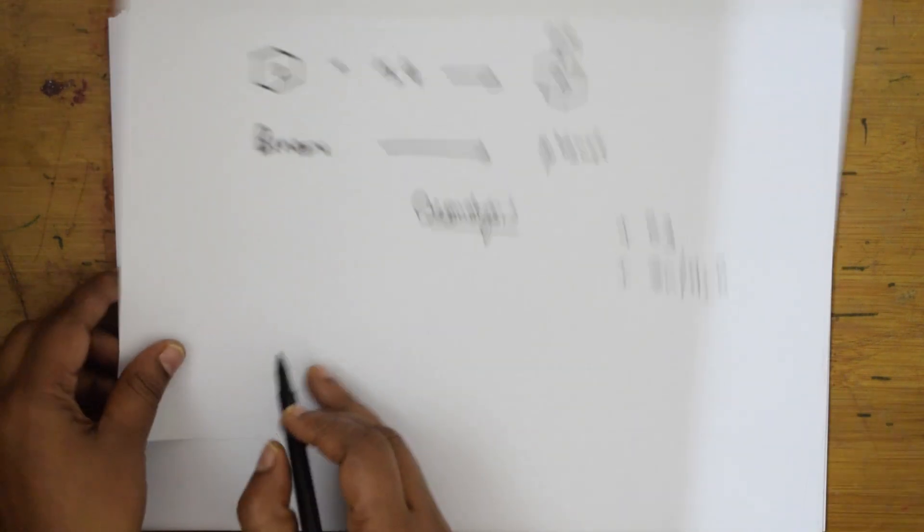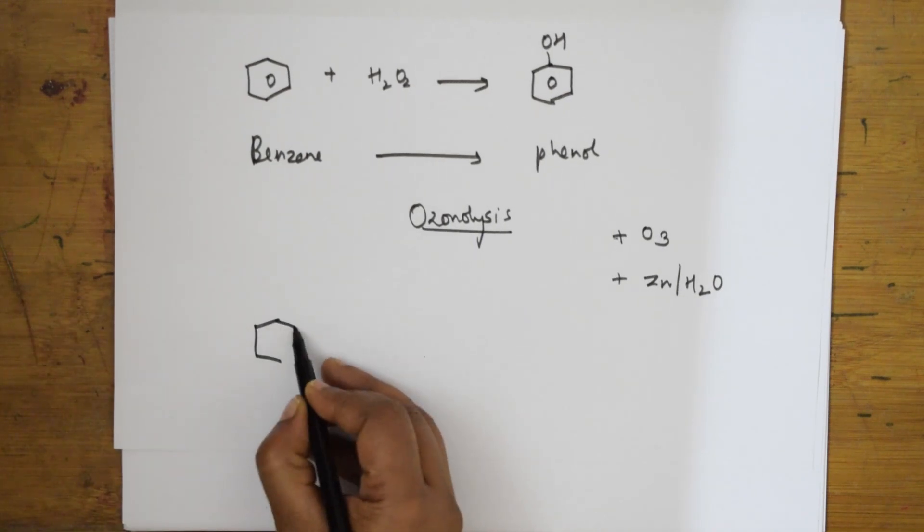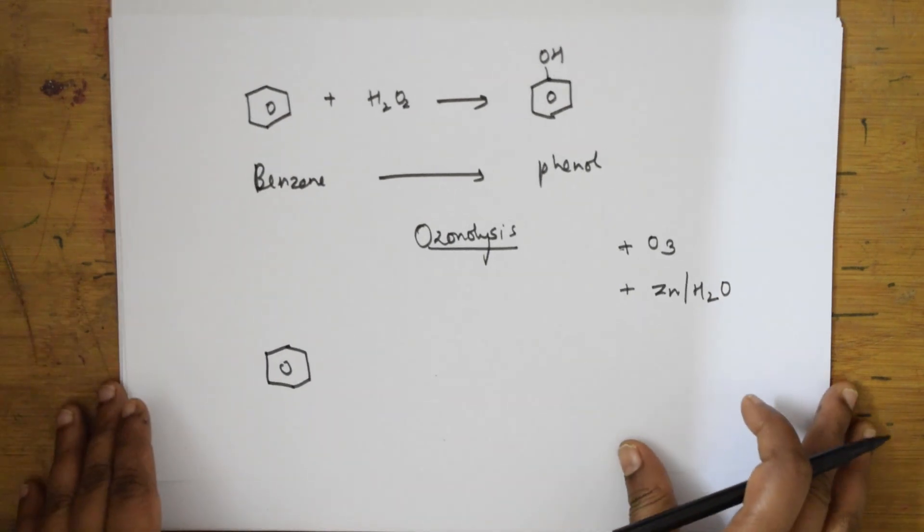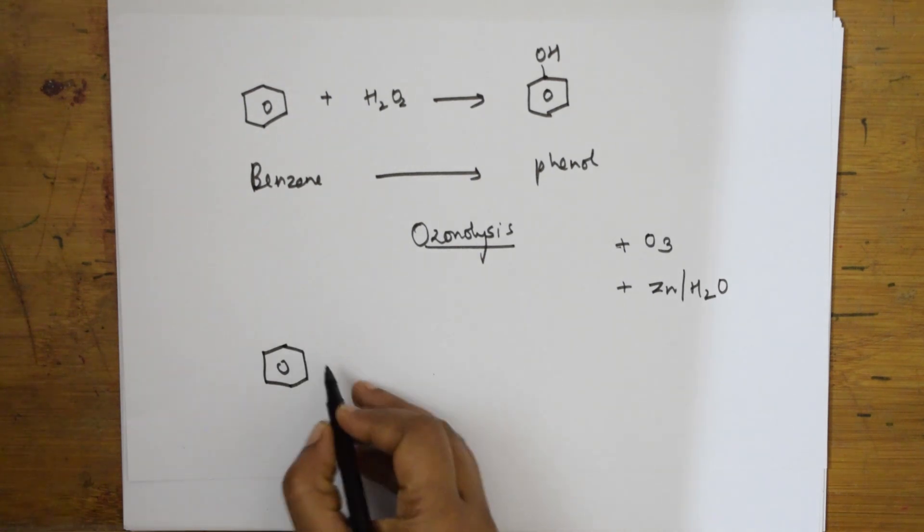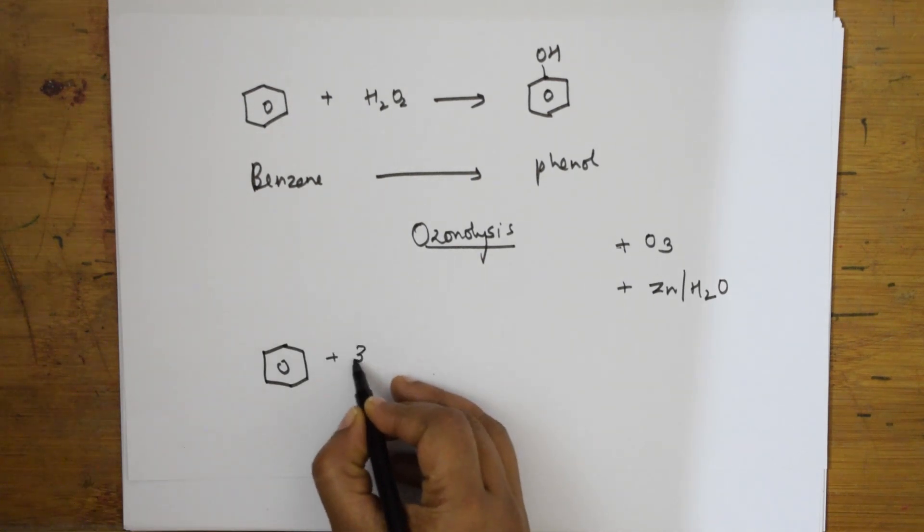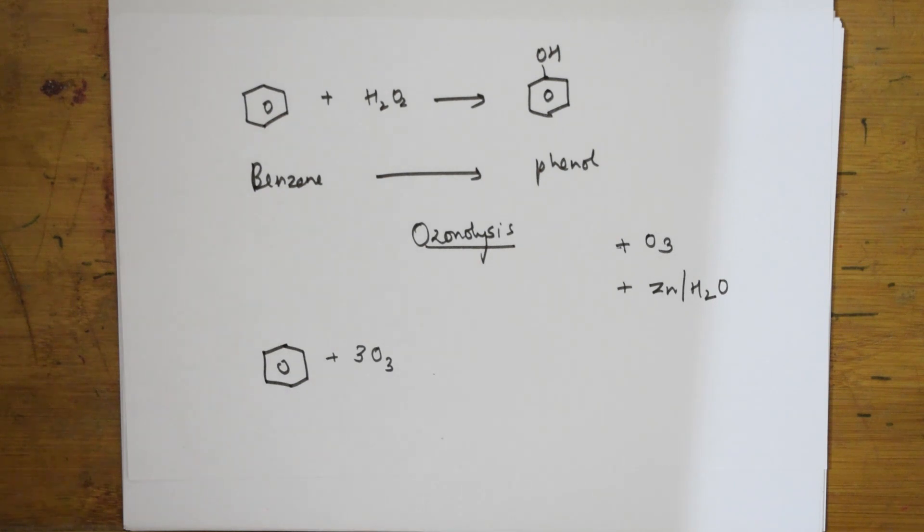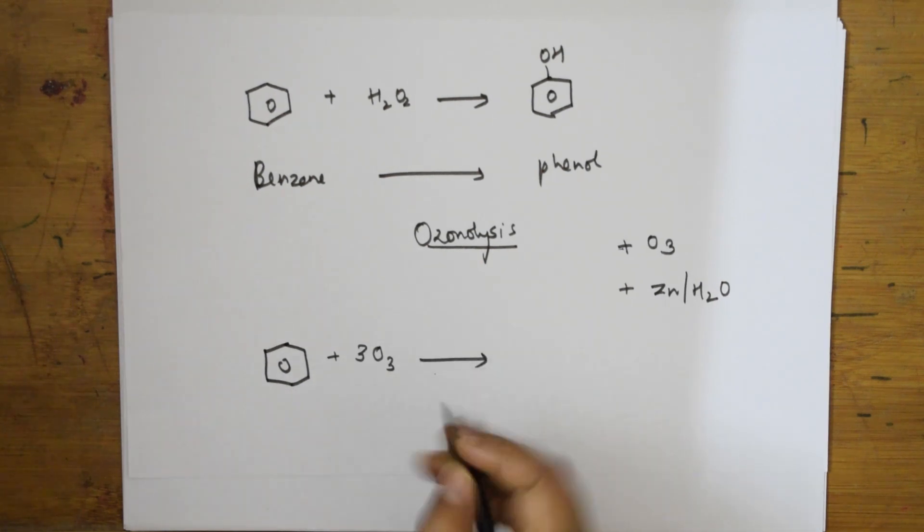Let's see how it goes. First of all I am going to take benzene. I hope it is clear. This benzene I am going to add ozone. Ozone is O3. How many pi bonds? Three. So I am going to add 3 moles of ozone.